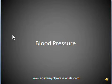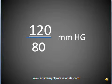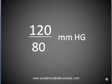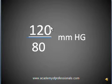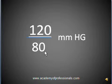Two values are measured during the measurement of blood pressure: one is known as systolic pressure and the other is diastolic pressure. Systolic pressure is the maximum or peak force exerted against the arterial walls when the left ventricle contracts, and it is written and read as the first number. Diastolic pressure is the pressure exerted during the left ventricle relaxation and is written and read as the second number.